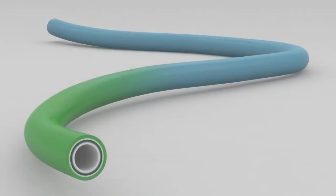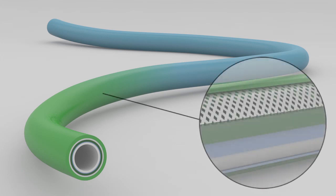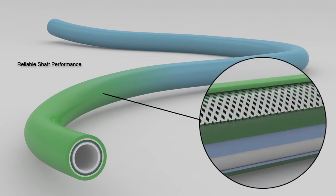Tri-Tie Extrusion Technology provides four key benefits over conventional manufacturing of guide catheters. Integrated bonding between layers ensures reliable shaft performance.